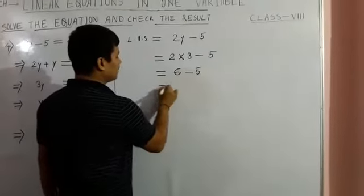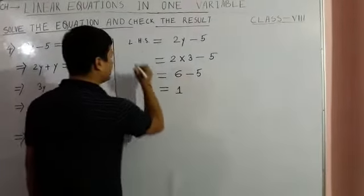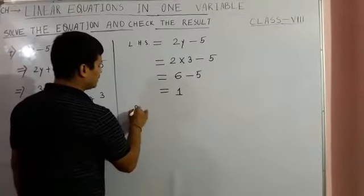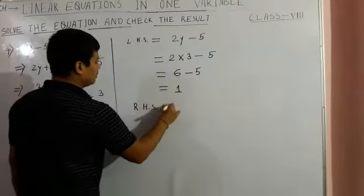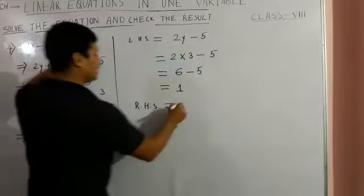6 minus 5, this is 1. In left hand side we got 1. In right hand side, what we have? 4 minus y.